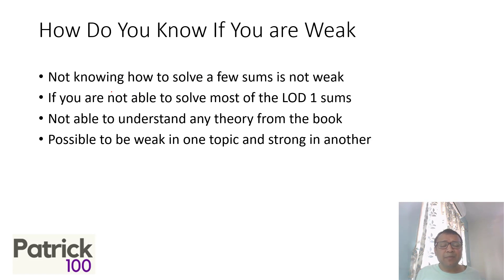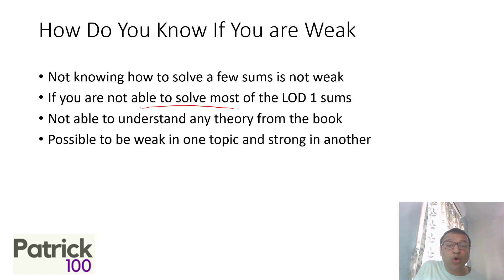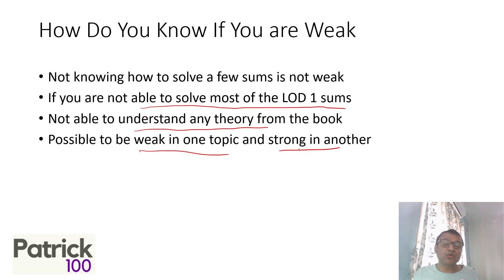How do you know if you're truly weak in maths? Some people feel that not being able to solve a few sums means they're weak. But in the actual exam, very few people can solve all the sums in the given timeframe, so not knowing a few sums doesn't mean you're weak. It's only a problem when you're not able to solve most of the LOD1 (easy) sums in CAT books, or when you can't understand the theory at all. It's also possible to be weak in one topic but strong in another — for instance, weak in geometry but strong in arithmetic. Identify topic by topic whether you're really weak or can still solve it.